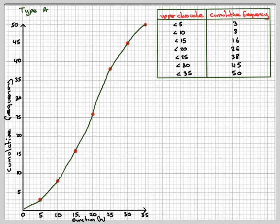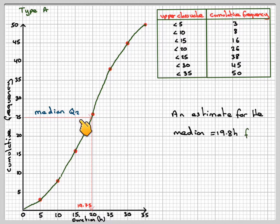The median will be the 25th value. So median, read across Q2, and then read down, we get 19.75. So an estimate for the median, that's called Q2, is 19.8 from the graph.